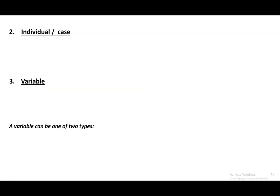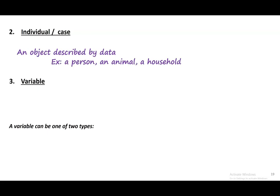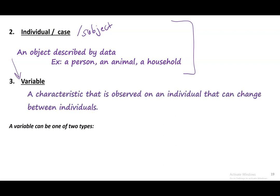We're going to define an individual or case — what is the smallest unit that you collect information from? It's an object described by data. If you're doing a survey, your individual or case is usually a person, sometimes called a subject. It could be an animal or a household — it's whatever smallest unit you collect information on. Once you have your individuals, what you collect on them — the information you collect — are variables. A variable is a characteristic you observe on an individual that can change between individuals. I might have a survey of OSU students asking about eye color: eye color is the variable, and each student is the individual or case.